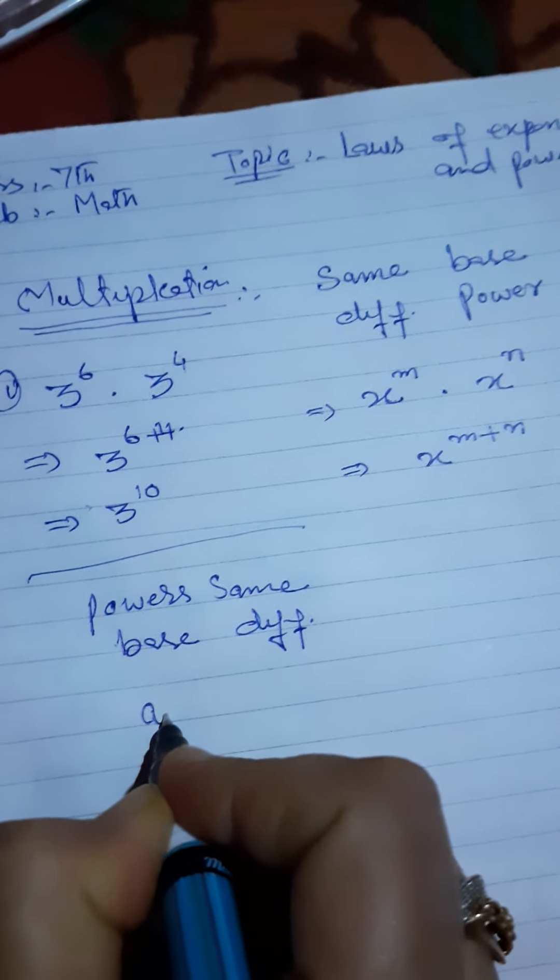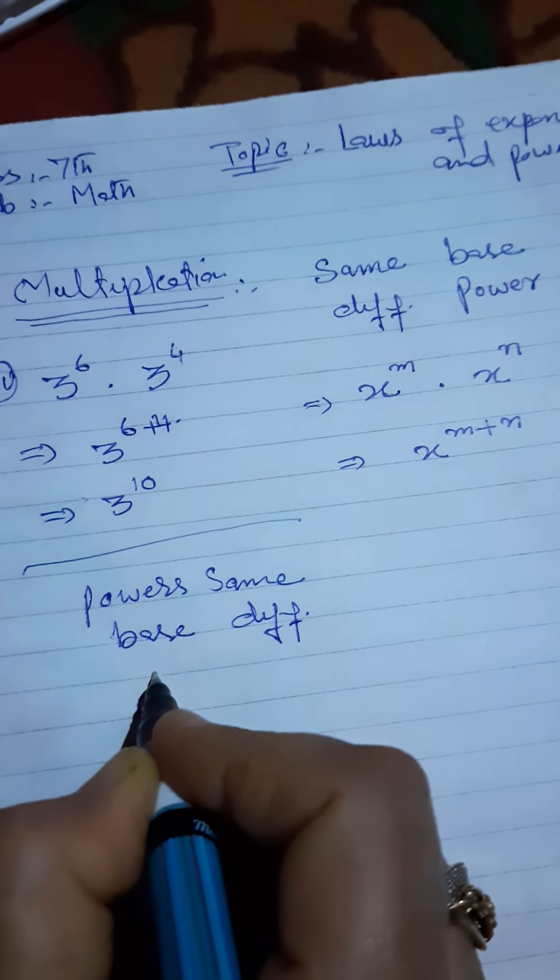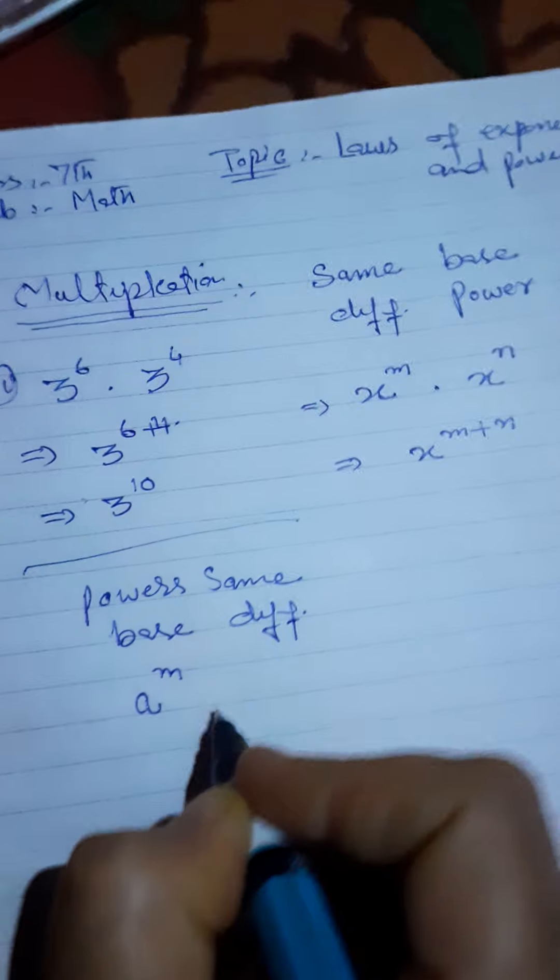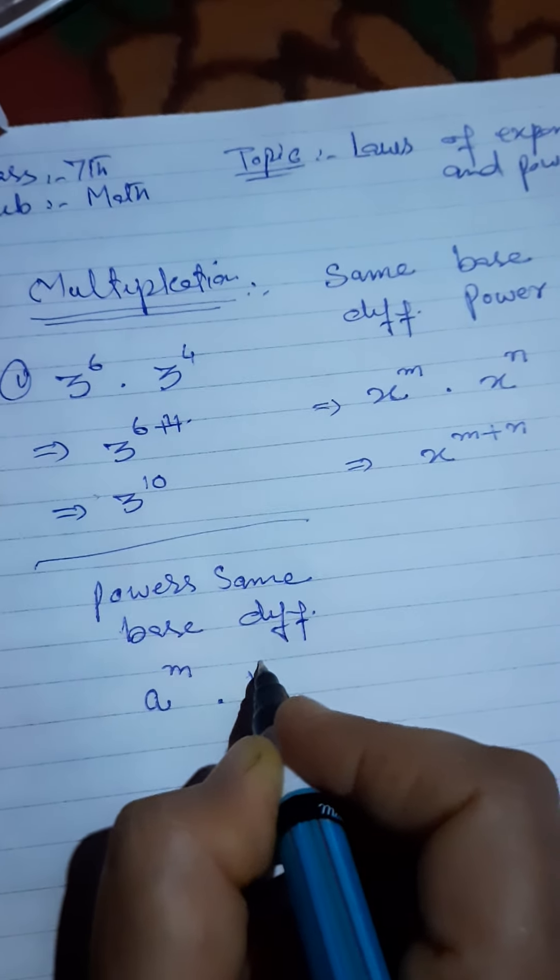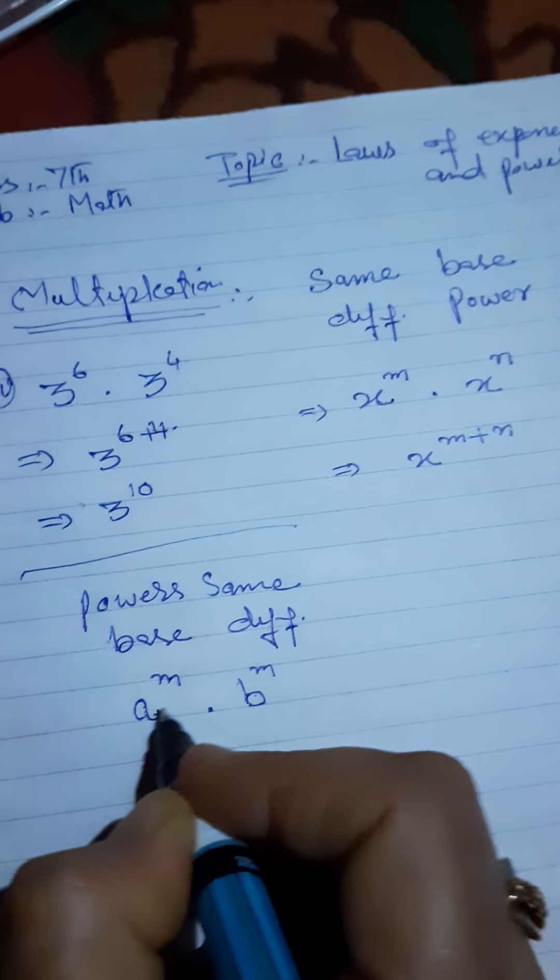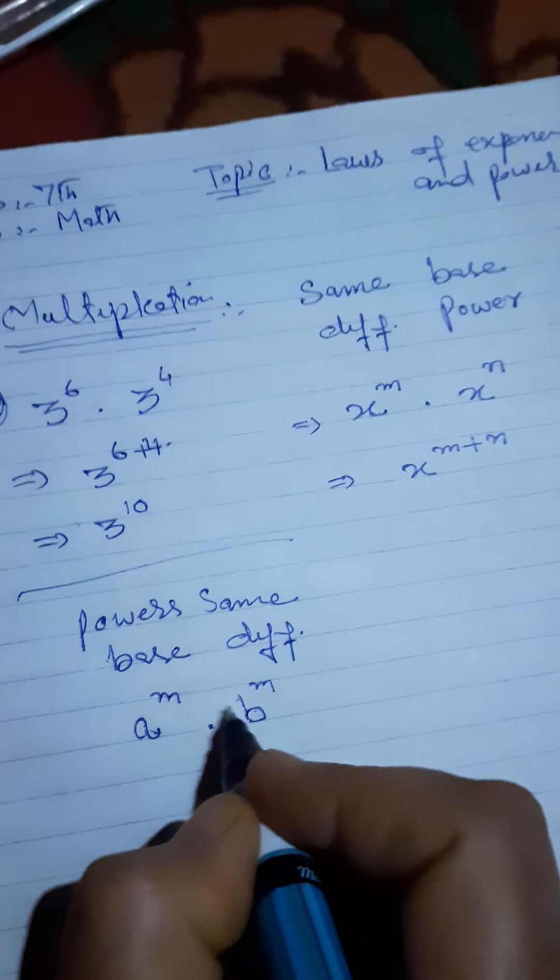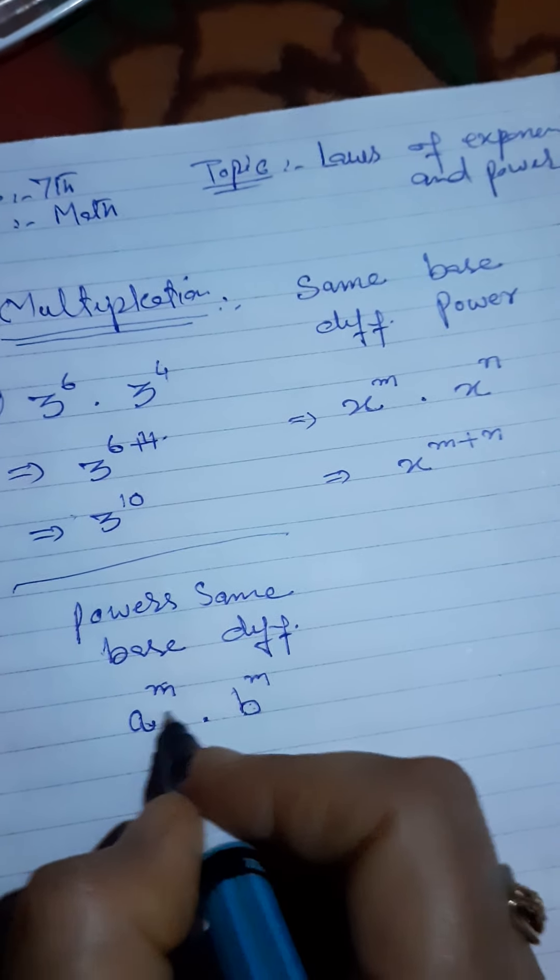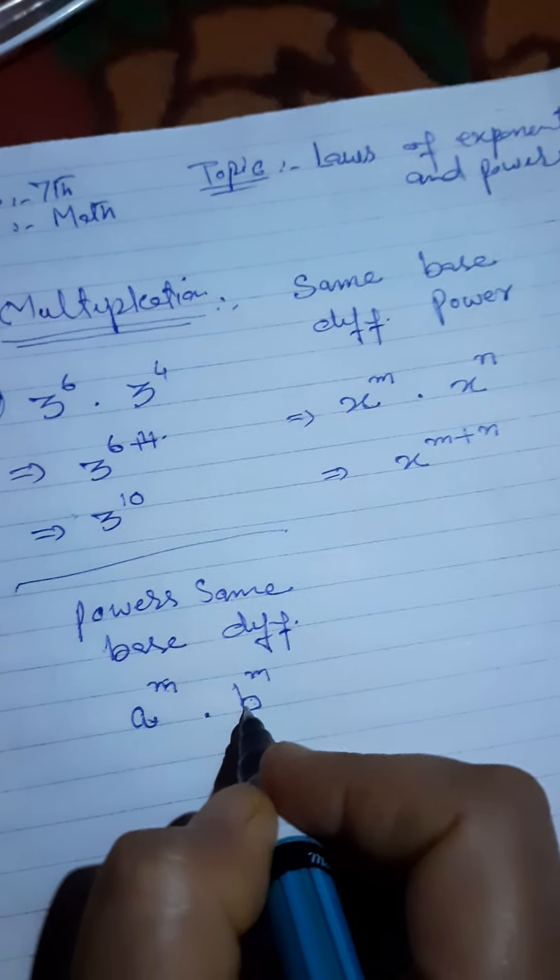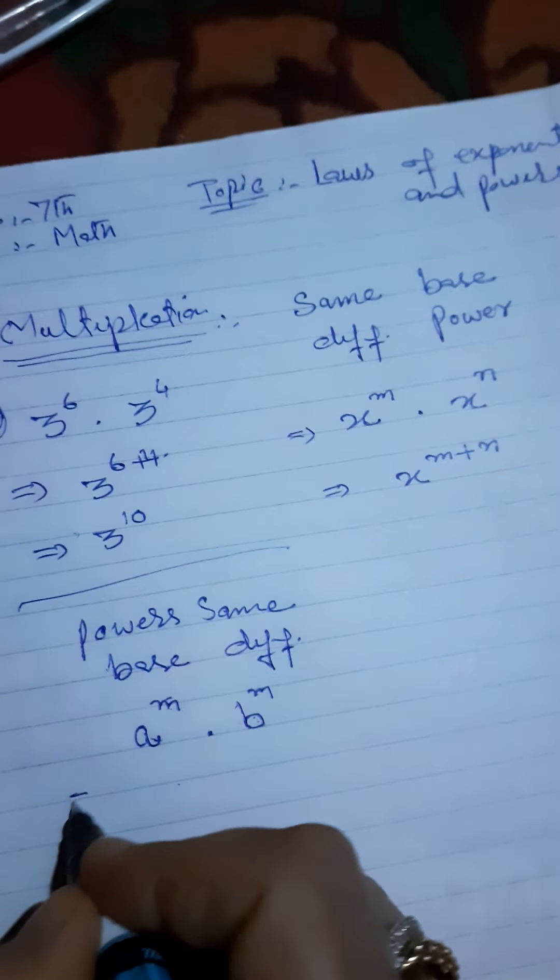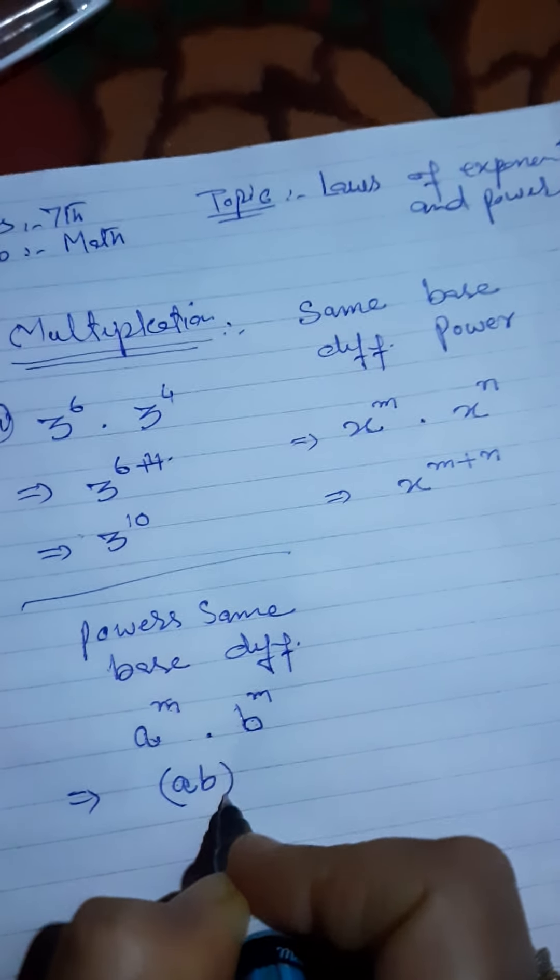For example, a raised to power m times b raised to power m, when we multiply them, the bases should be multiplied and we get a times b, all raised to power m.